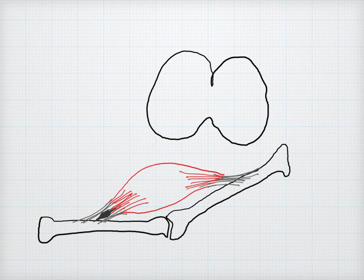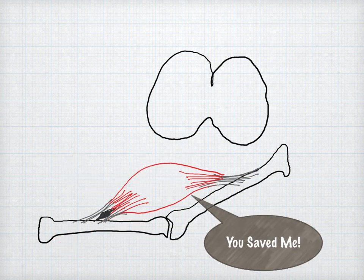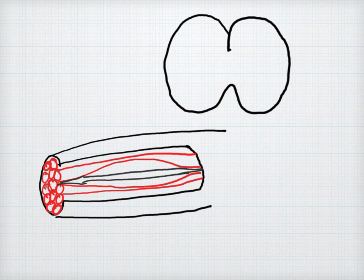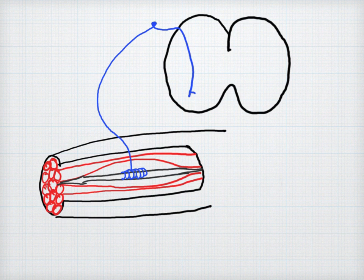This allows the Golgi tendon organ to inhibit muscle contraction when it senses excessive tension of the monitored muscle to prevent muscle injury. The remaining monitoring systems are proprioceptive and located within the intrafusal muscle fiber spindles. One system consists of annulospiral endings,